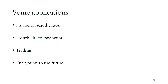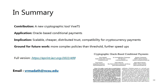In summary, this paper shows how to do oracle-based conditional payments by introducing a new cryptographic primitive called verifiable witness encryption for threshold signatures. There is a lot of future work to be done: making this much faster and potentially supporting more complex oracle policies beyond simple T-out-of-N thresholds.